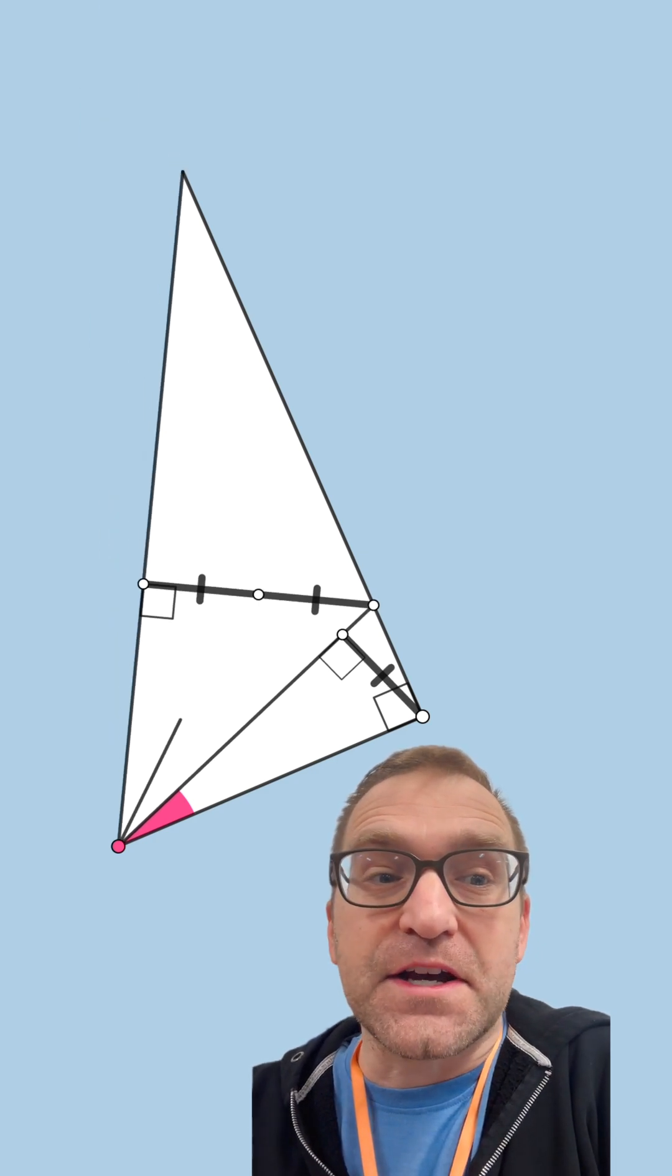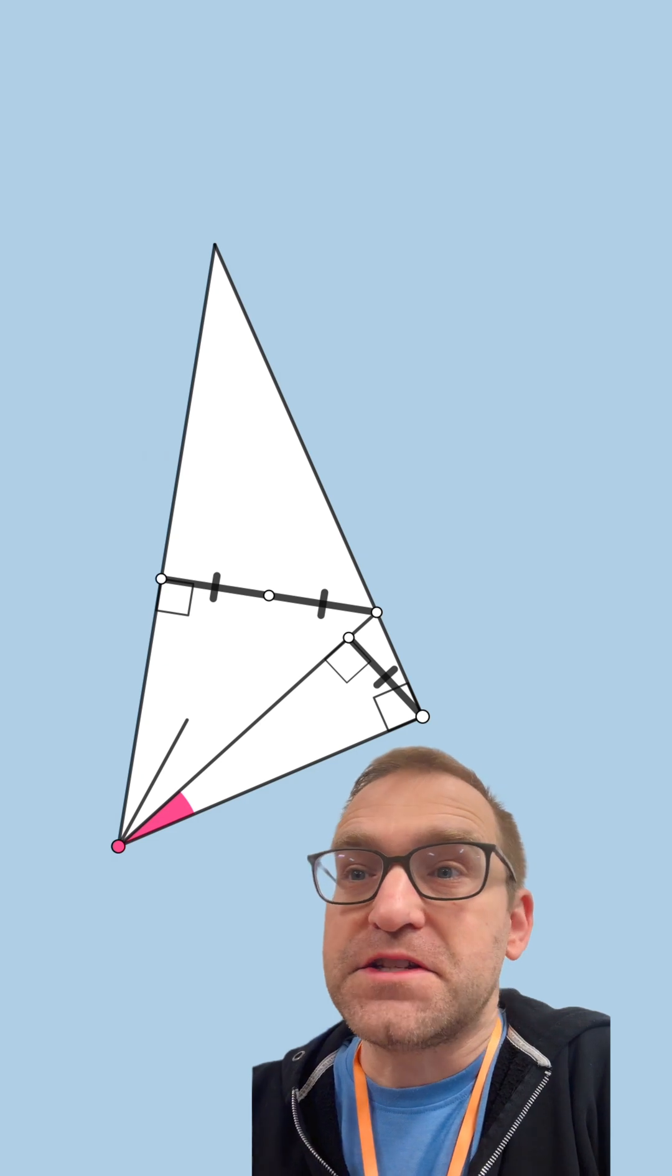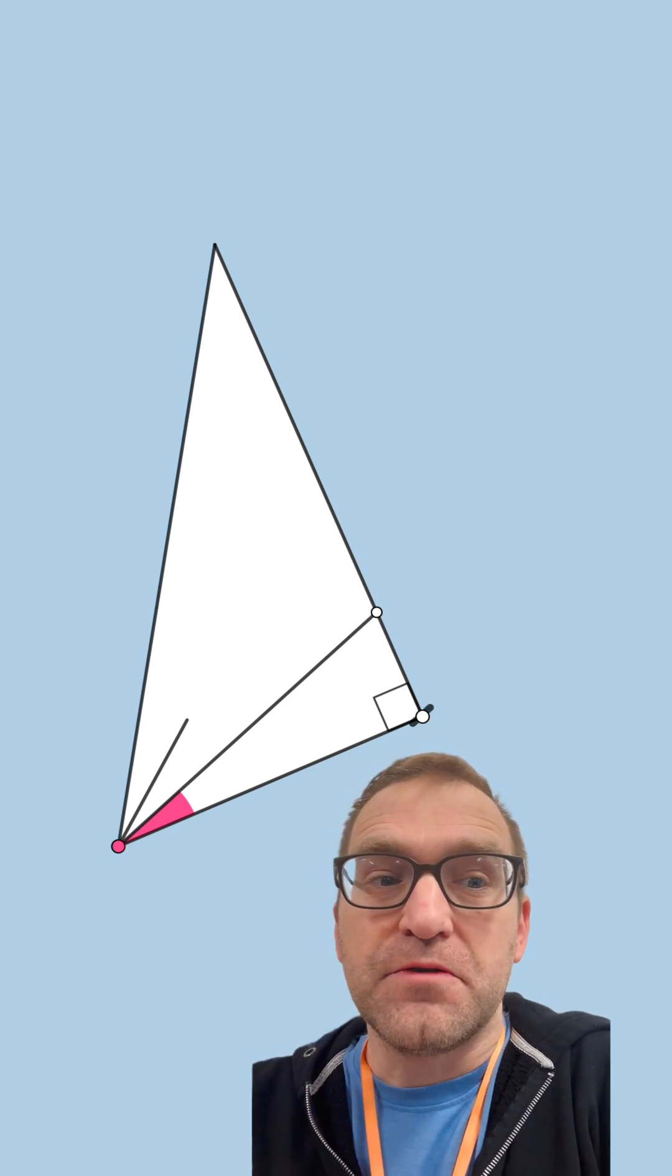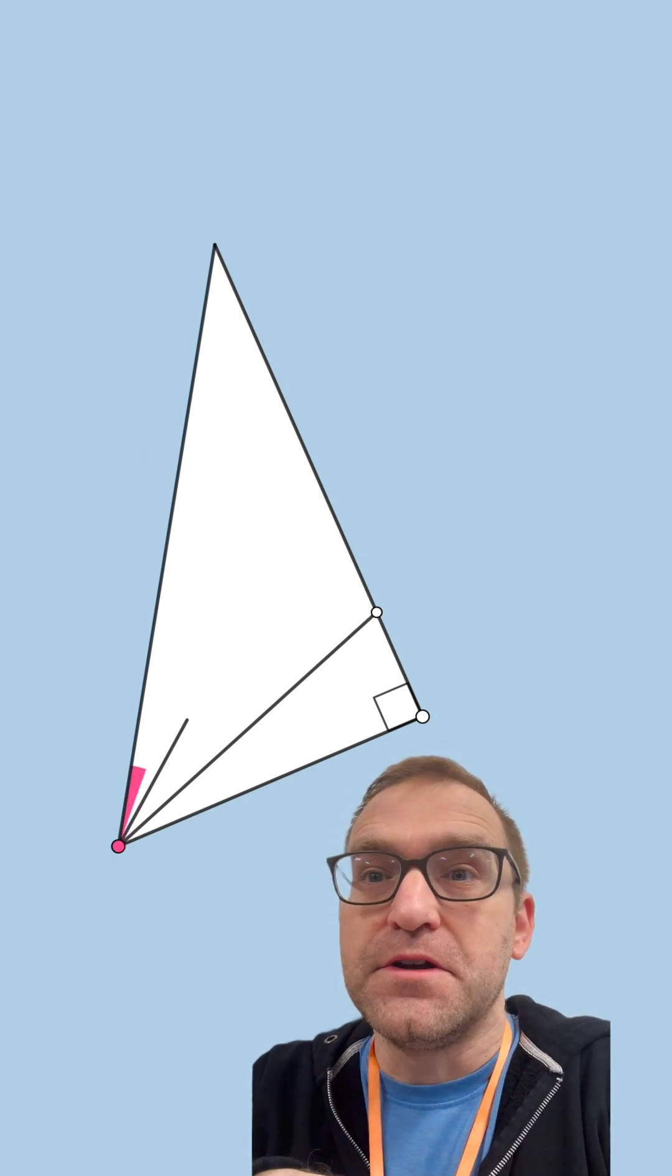And it doesn't matter the size of that acute angle right there. Let's actually change that triangle up a bit. See, one, two right there. And that angle is still trisected.